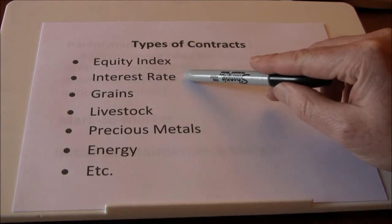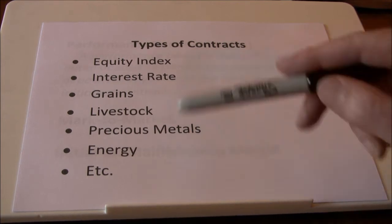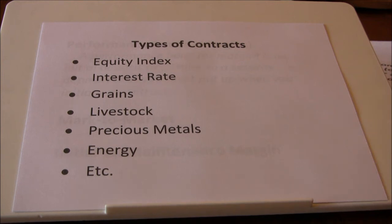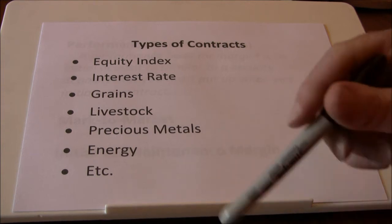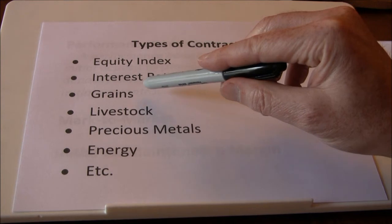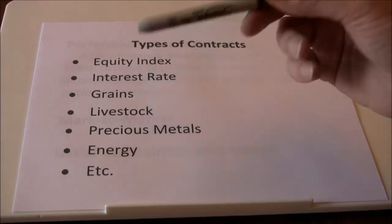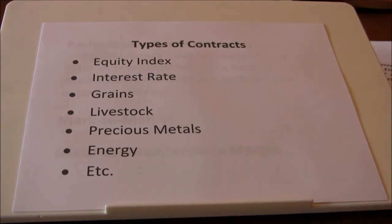There are several different interest rate futures. You can buy interest rate futures on treasury bonds, treasury bills, and eurodollar accounts — lots of different types of contracts tied to interest rates. Grains, which we mentioned already, like corn and wheat, were some of the earlier types of futures markets.